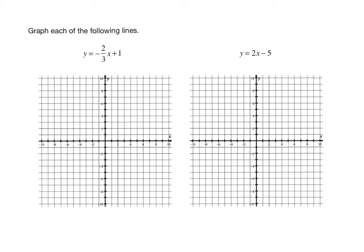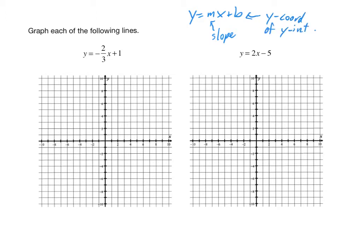Now that we've had practice finding the equations of lines given a variety of different pieces of information, let's now work on graphing the line given a linear equation. Before we start these two problems, let's recall that our non-vertical lines all have an equation of the form y equals mx plus b, which is called the slope-intercept form of a line. While x and y are our input and output variables, m and b are specific parameters — m is the slope, and b is the y-coordinate of the y-intercept. We can use this knowledge to help us graph these two lines here.